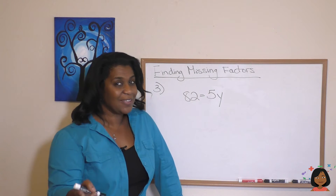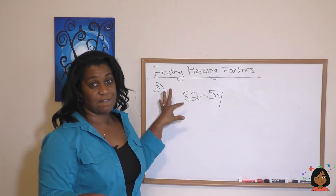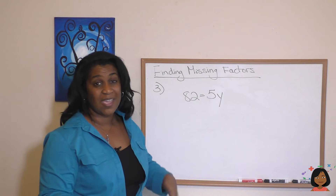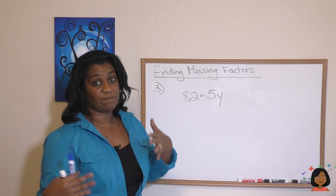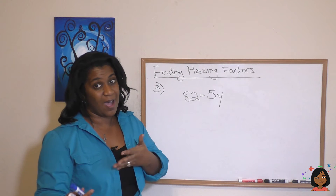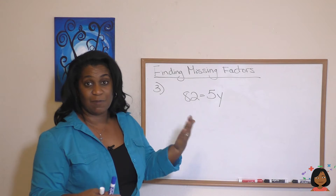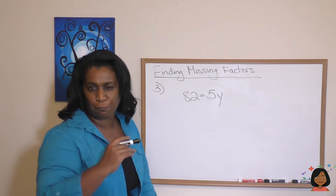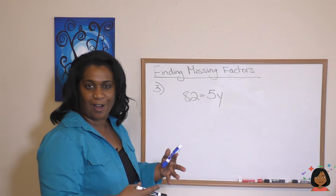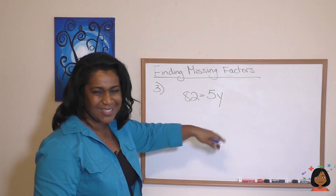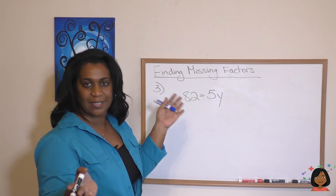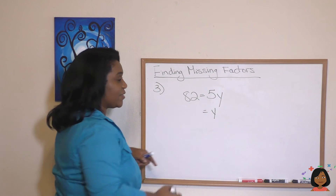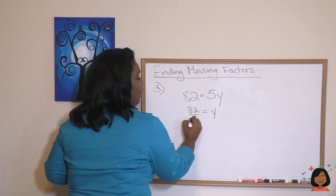The problem might look backwards because we're so used to seeing the variable on the left-hand side. But don't sweat it — 82 = 5y is the same thing as 5y = 82. If it really bothers you, feel free to rewrite it so you feel more comfortable. But it's the same thing. We do the opposite of multiplication and divide both sides by 5, leaving y on one side and 82 over 5 on the other.